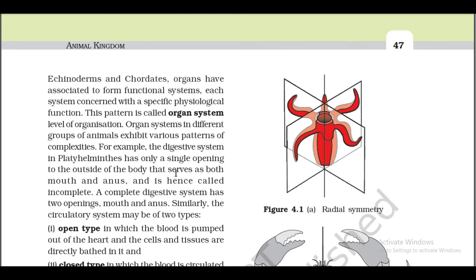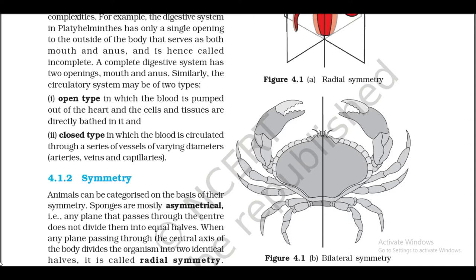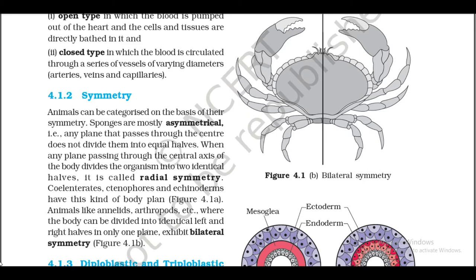Organ systems in different groups of animals exhibit various patterns of complexity. For example, the digestive system in Platyhelminthes has only a single opening to the outside of the body that serves as both mouth and anus, and is hence called incomplete. A complete digestive system has two openings: mouth and anus. Similarly, the circulatory system may be of two types: open type, in which the blood is pumped out of the heart and cells and tissues are directly bathed in it, and closed type, in which the blood is circulated through a series of vessels of varying diameters — arteries, veins, and capillaries.